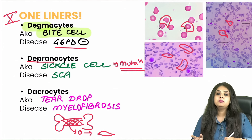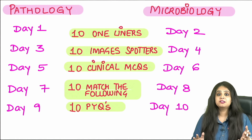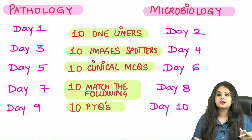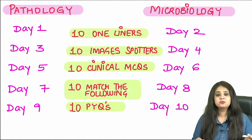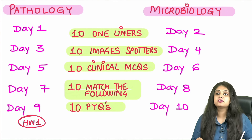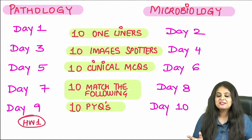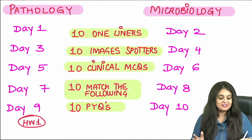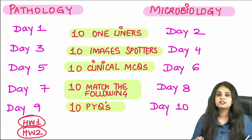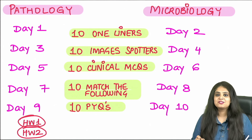Those were the 10 questions of the day. Tomorrow we'll cover 10 one-liners for microbiology, followed by the rest of the schedule. Remember your two homeworks: homework one — the master regulator of iron and whether it is a positive or negative regulator; homework two — the position at which the glutamic acid to valine mutation in sickle cell anemia occurs. See you tomorrow in the microbiology series.